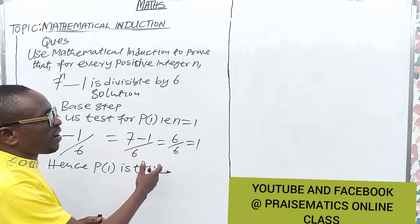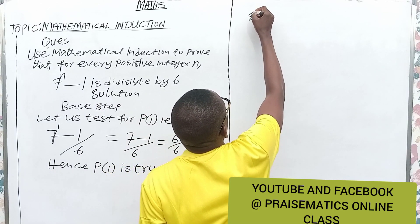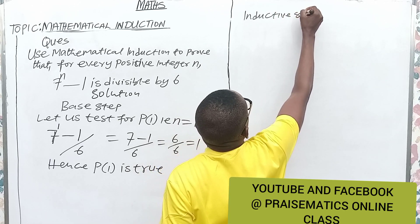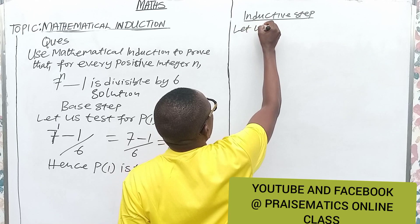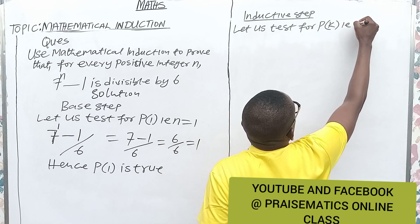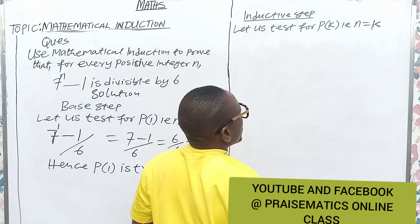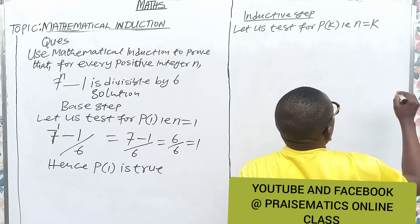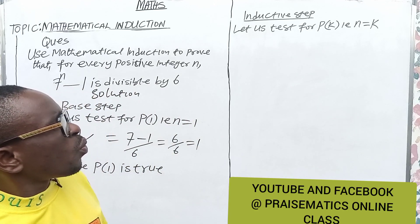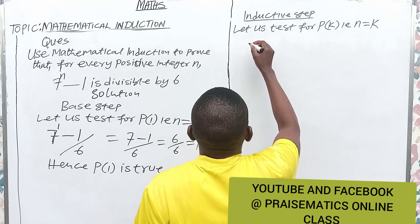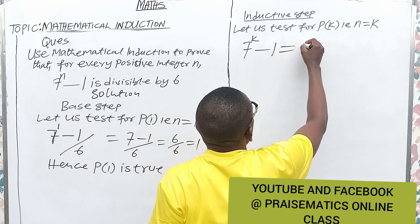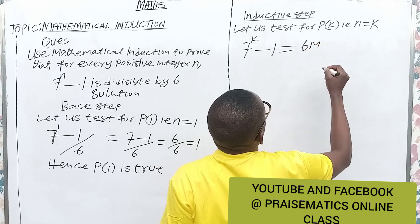6 divided by 6 is divisible. Step 2, Case 2 — the inductive step. Let us test for p(k), that is n equals k. From the equation, anywhere we see n we replace it with k. So 7 raised to power k minus 1 is divisible by 6. Let's just say it equals 6m.